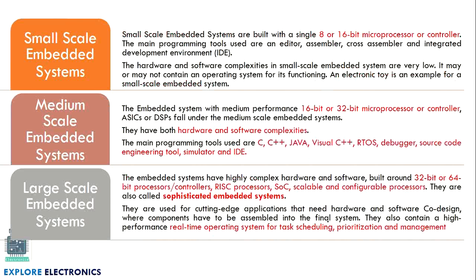The other classification is by scale. A small scale embedded system is built using 8 or 16-bit microprocessors, as seen in the first or second generation. The main programming tools used are an editor, assembler, cross assembler, or integrated development environment — IDE. The hardware and software complexities in small scale embedded systems are very low. An electronic toy is an example.